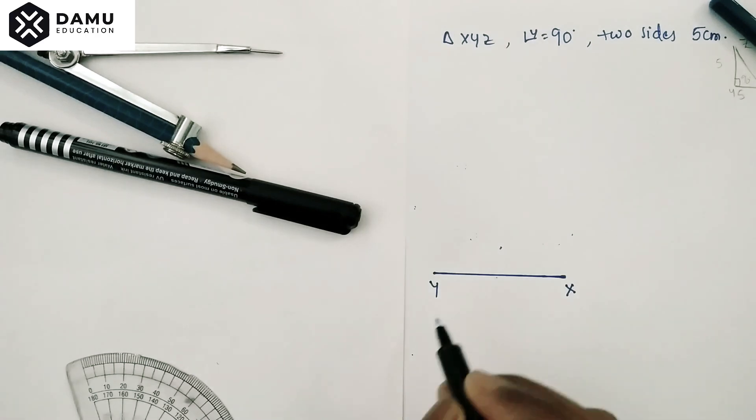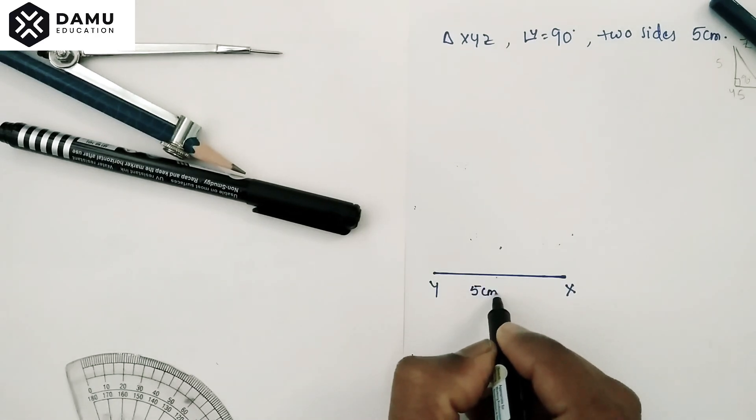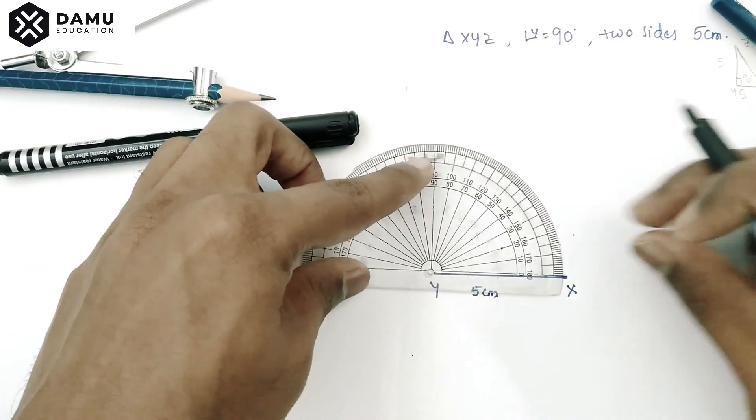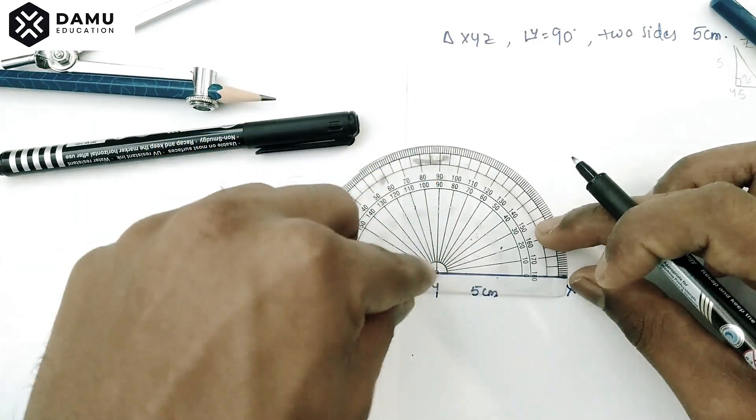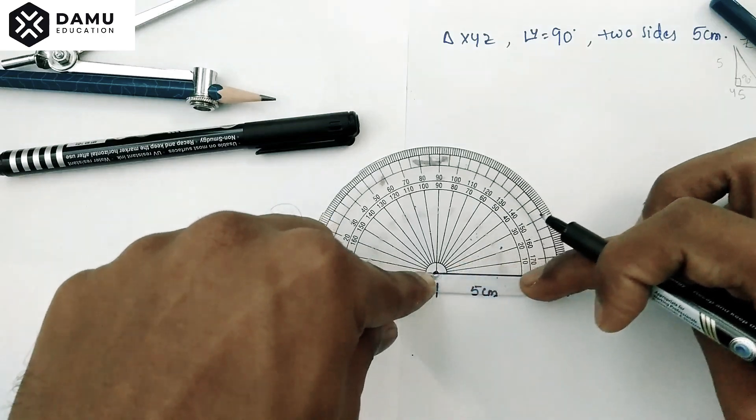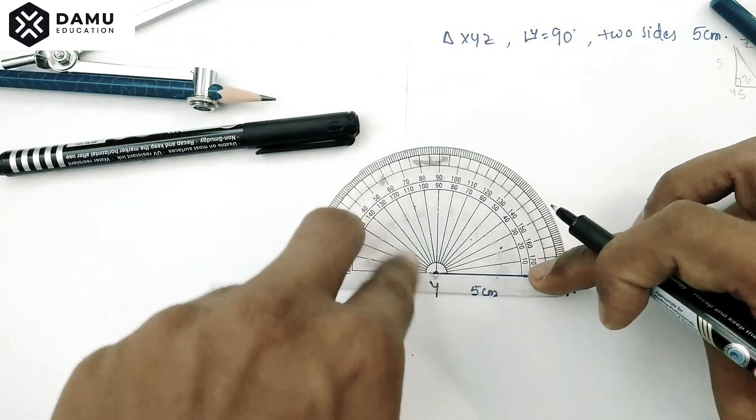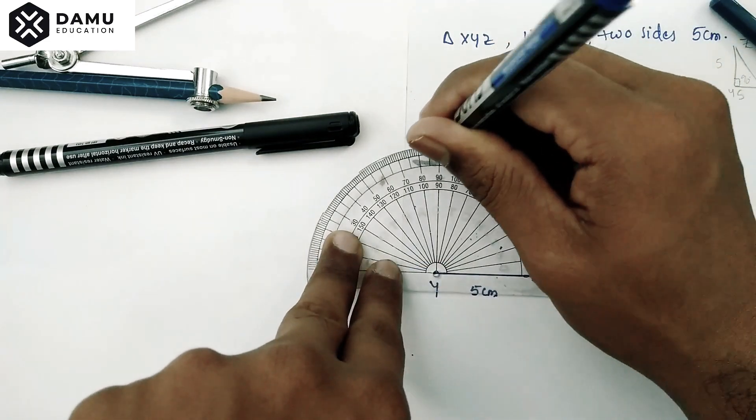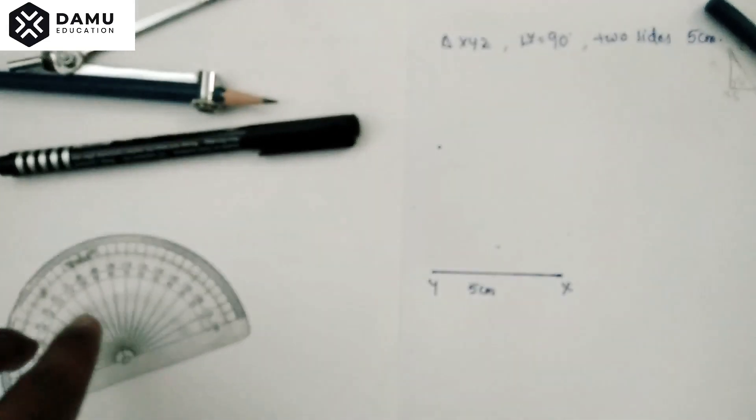Then measure the angle at Y. Keep the center of your protractor at Y and place this line with the XY line at 0 degrees. Measure the angle from this side, 90 degrees, draw one ray.